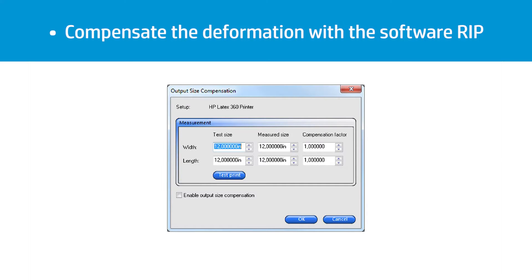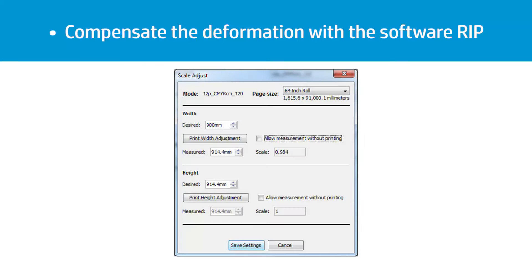Some software RIPs provide a compensation option that allows you to compensate easily for substrate shrinkage or expansion. See your RIP documentation.